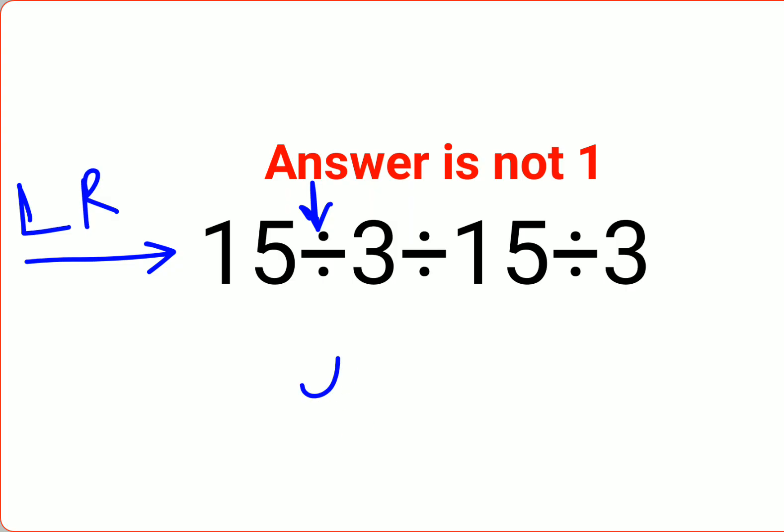So 15 divided by 3 is 5 divided by 15. I'm sorry, I don't know why the pen is not looking. Divided by 3.